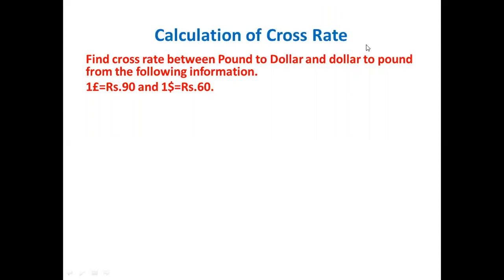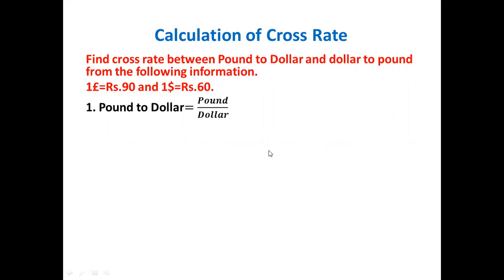Calculation of Cross Rate — find the cross rate between Pound to Dollar and Dollar to Pound from the following information. If one Pound equals to 90 Rupees and one Dollar equals to 60 Rupees, we know the value of Pound in Rupees and Dollar in Rupees. On the basis of this, we are going to calculate Pound to Dollar and Dollar to Pound. First, we find Pound to Dollar. Pound to Dollar equals to Pound divided by Dollar — that is 90 divided by 60.